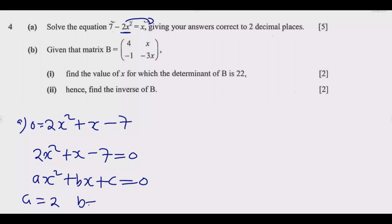So this is ax squared plus bx plus c equals 0, so a is equal to 2, b equals 1 (the coefficient of x), then c equals negative 7. Now the fact that the question is asking us to give the answer correct to two decimal places, we need to use the quadratic formula.